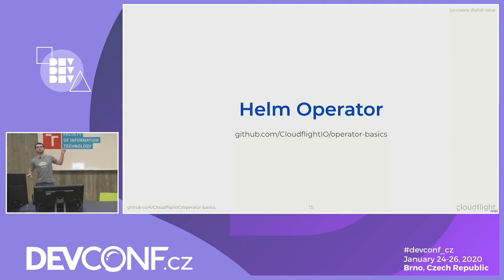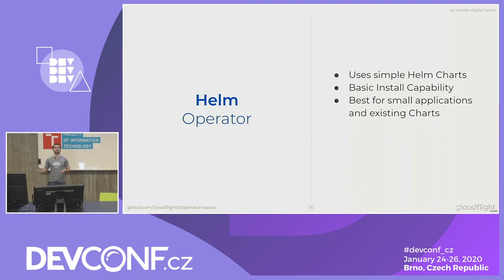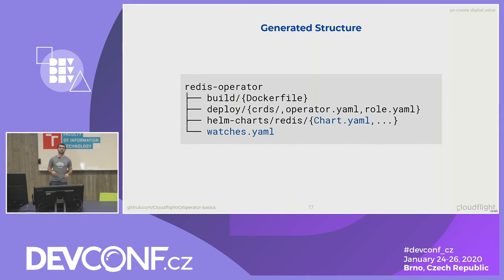Let's start with the Helm operator. Sample code is available in our GitHub repository if you want to follow along. The Helm operator uses simple Helm charts to deploy resources — if you already have a simple Helm chart, you can take the Operator SDK and package it into an operator in no time. The Operator SDK will bootstrap a folder structure: a build folder containing a Dockerfile, a deploy folder containing custom resource definitions and instructions on how to run your operator, and then the important part — the Helm charts directory containing plain old Helm charts.